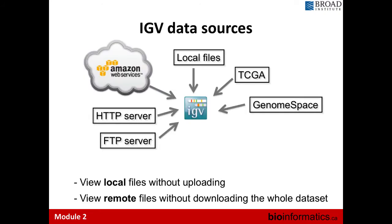IGV allows you to pull data from multiple different sources — locally, from TCGA, genome space, or servers. This enables collaboration across the world: as long as collaborators have access to your SharePoint, they can view any of the alignments or data files you currently have.